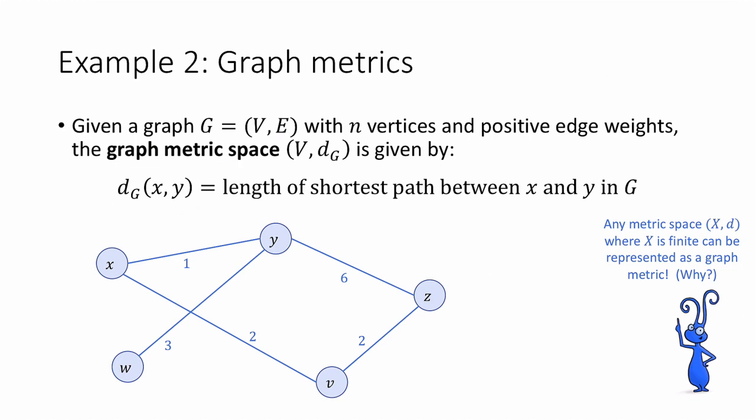So for example, in this graph here, the distance between x and y is 1, because the length of the shortest path from x to y is 1. The distance between x and z is 4. Here's the shortest path. And the distance between y and z is 5, going around this way. It's not hard to see that any finite metric space can be represented as a graph metric. If this isn't clear to you, pause the video now and convince yourself of it.